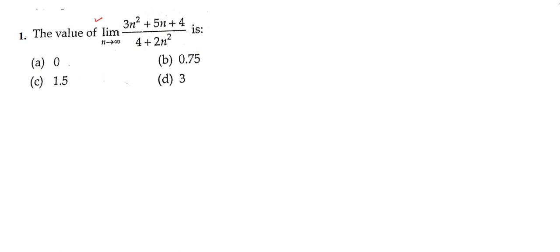Our first question is on limits: limit n tends to infinity of (3n² + 5n + 4) divided by (4 + 2n²). If we directly put infinity in place of n, our limit will come in infinity by infinity form, and we do not want this form.